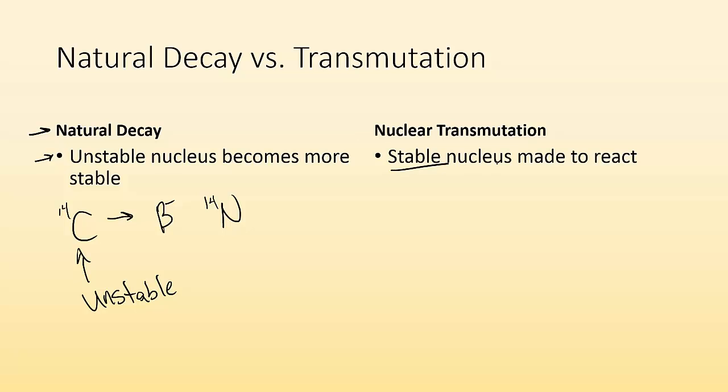Whereas nuclear transmutation, we have a stable nucleus, right? In the previous example, we had stable iron that we shot with a particle bullet, right? A neutron,